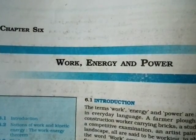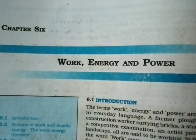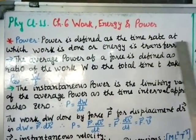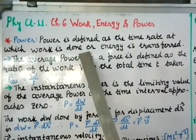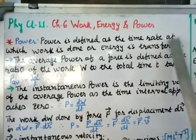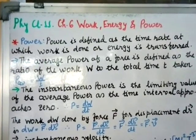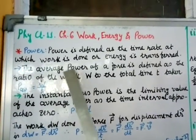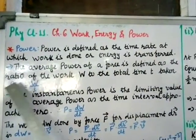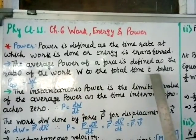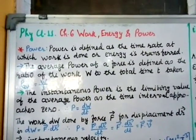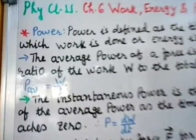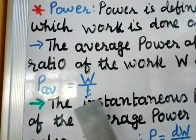Physics class 11, chapter 6: work, energy and power. Power is defined as the time rate at which work is done or energy is transferred. The average power of a force is defined as the ratio of work W to the total time t taken. Mathematically, P_average equals W divided by t.